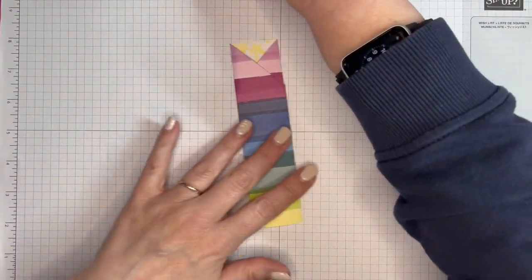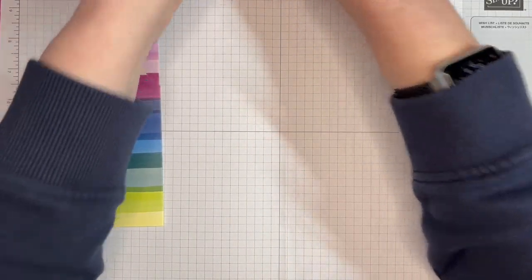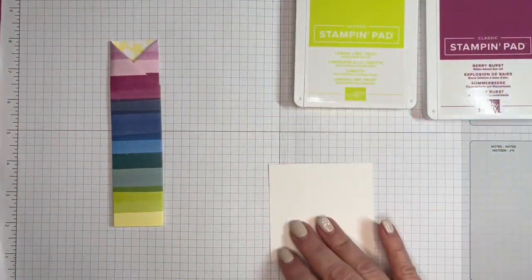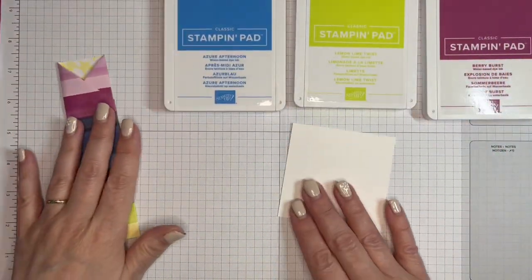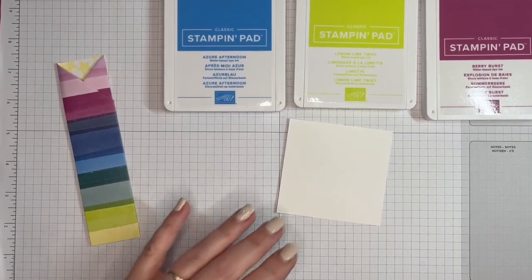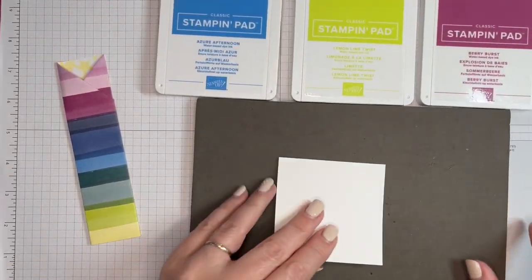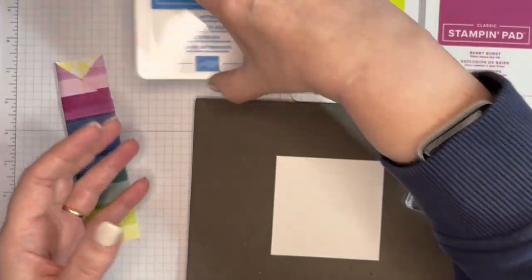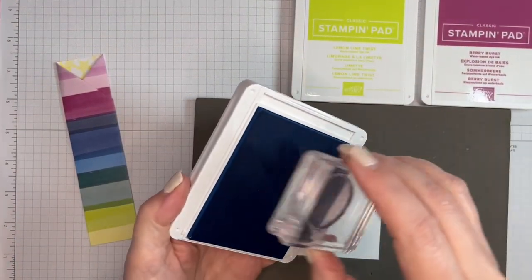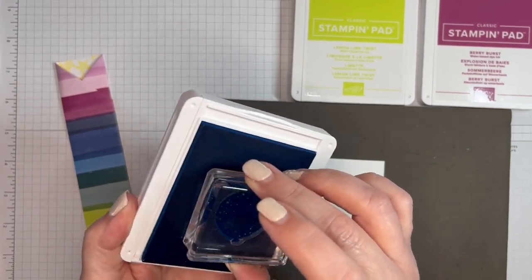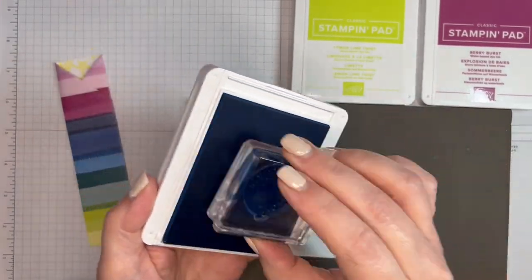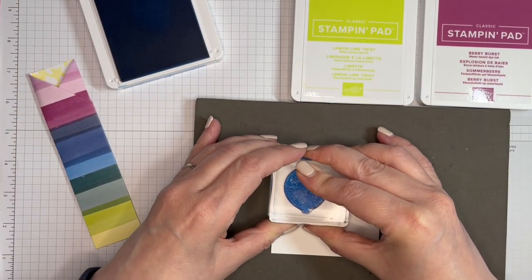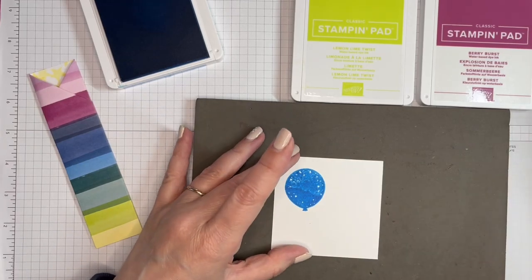We need to do the decoration for it. I am using Berry Burst, Lemon Lime Twist, and Azure Afternoon. This is a photopolymer stamp set, so I'll just bring in my Stampin' Pierce mat. We'll go Azure Afternoon for the balloon, just making sure that we've got that all covered. Look at that.